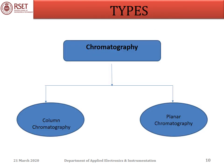Chromatographic methods can be classified in two ways. The first classification is based upon the physical means by which the stationary and mobile phases are brought into contact. They are column chromatography and planar chromatography. In column chromatography, the stationary phase is held in a narrow tube through which the mobile phase is forced under pressure. In planar chromatography, the stationary phase is supported on a flat plate, and the mobile phase moves through it by gravity or capillary action.